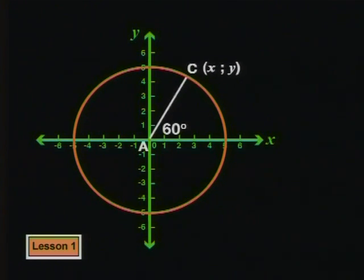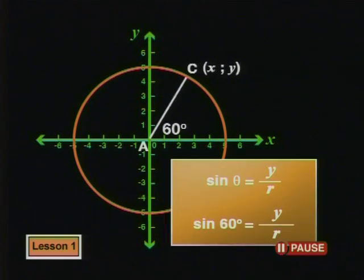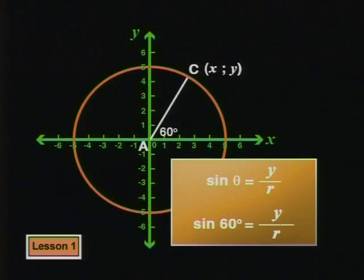Let's stop turning the line segment here, where theta equals 60 degrees. Can you work out the value of sine 60 degrees? The length of the radius r hasn't changed. It has a measurement of 5 units.